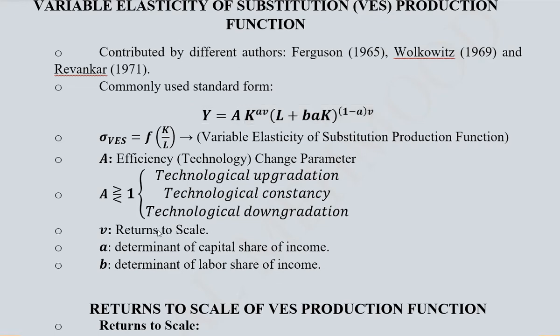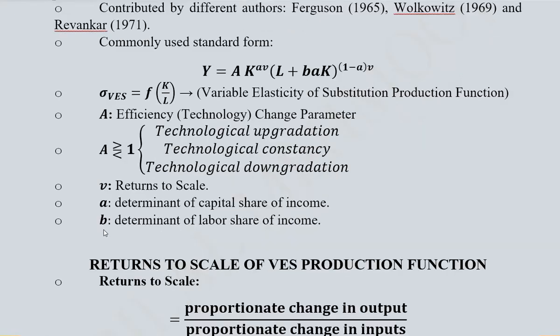The parameter v represents returns to scale. When v is greater than 1, there are increasing returns to scale. When v is less than 1, there are decreasing returns to scale. When v equals 1, there are constant returns to scale. This is similar to what we've seen in Cobb-Douglas and CES production functions.